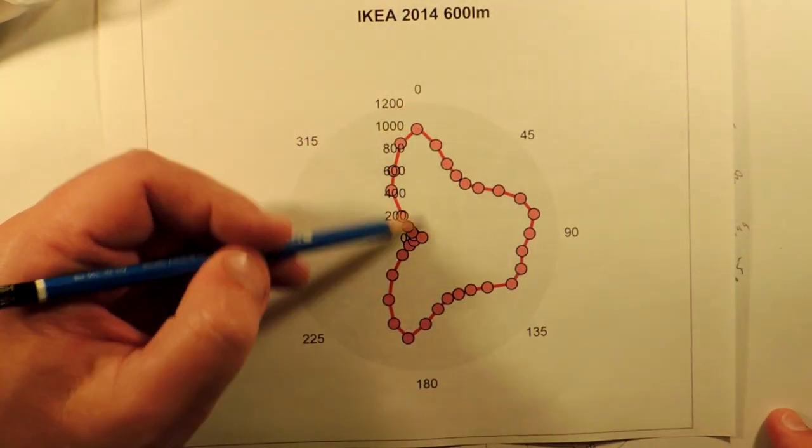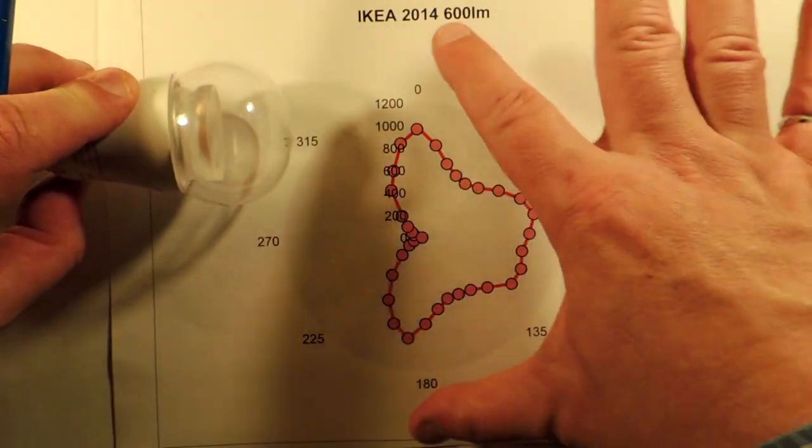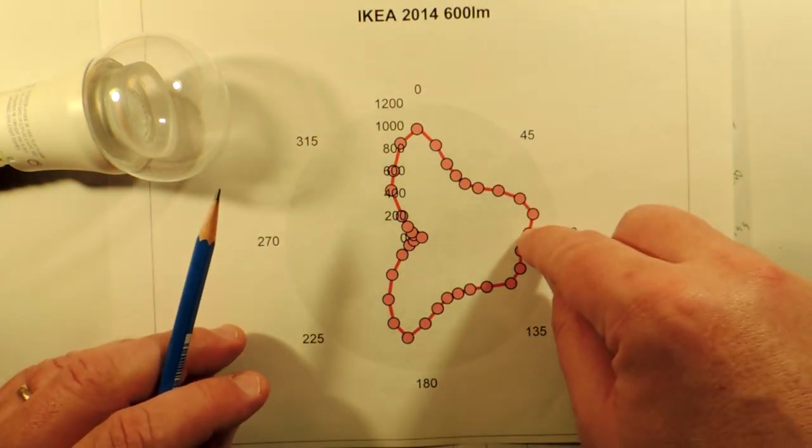It's got two peaks on the side of the bulb and that's I presume because this acrylic diffuser is pushing a lot of light out in that direction. Then there's great dark spots and then there's a bit of light in the front.